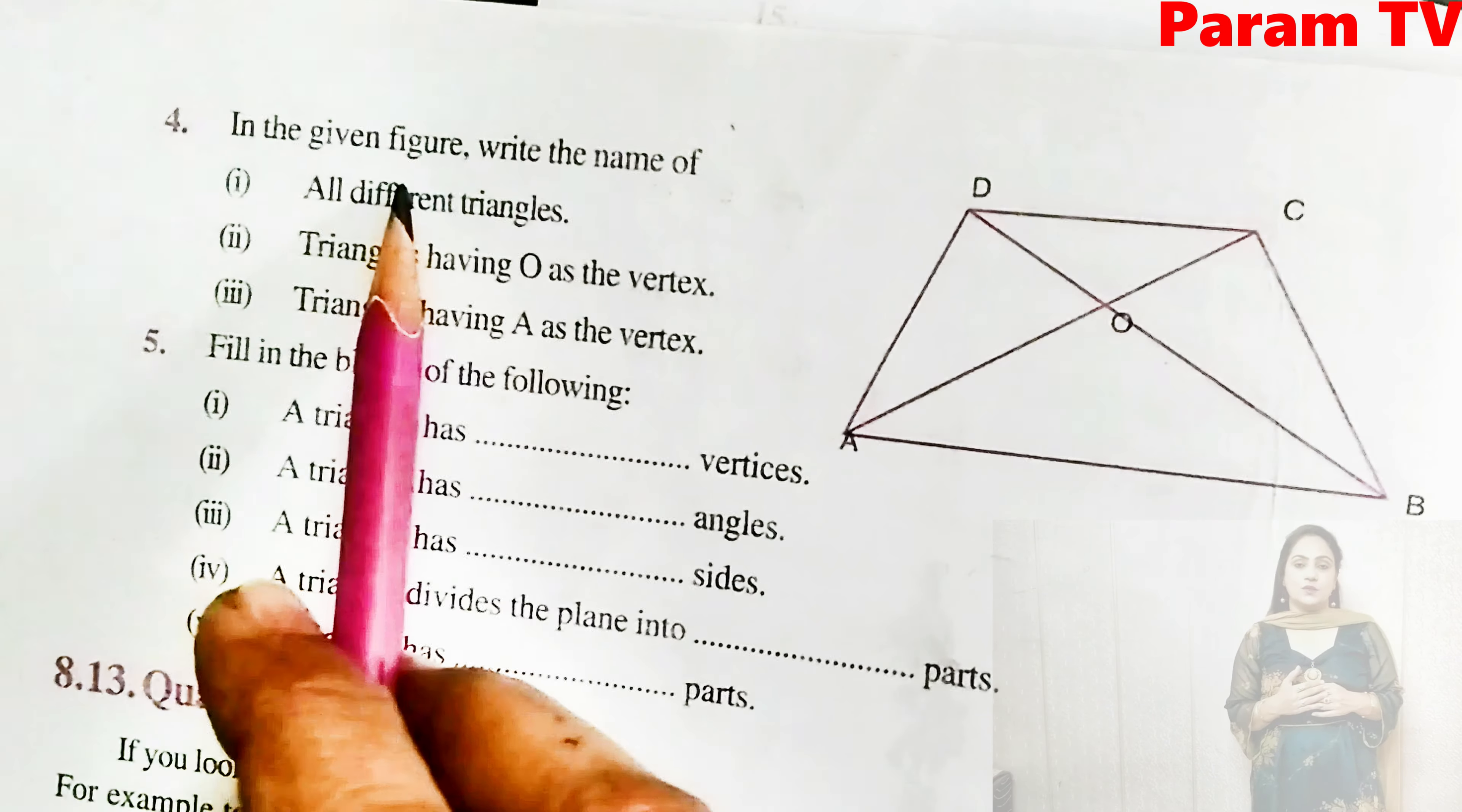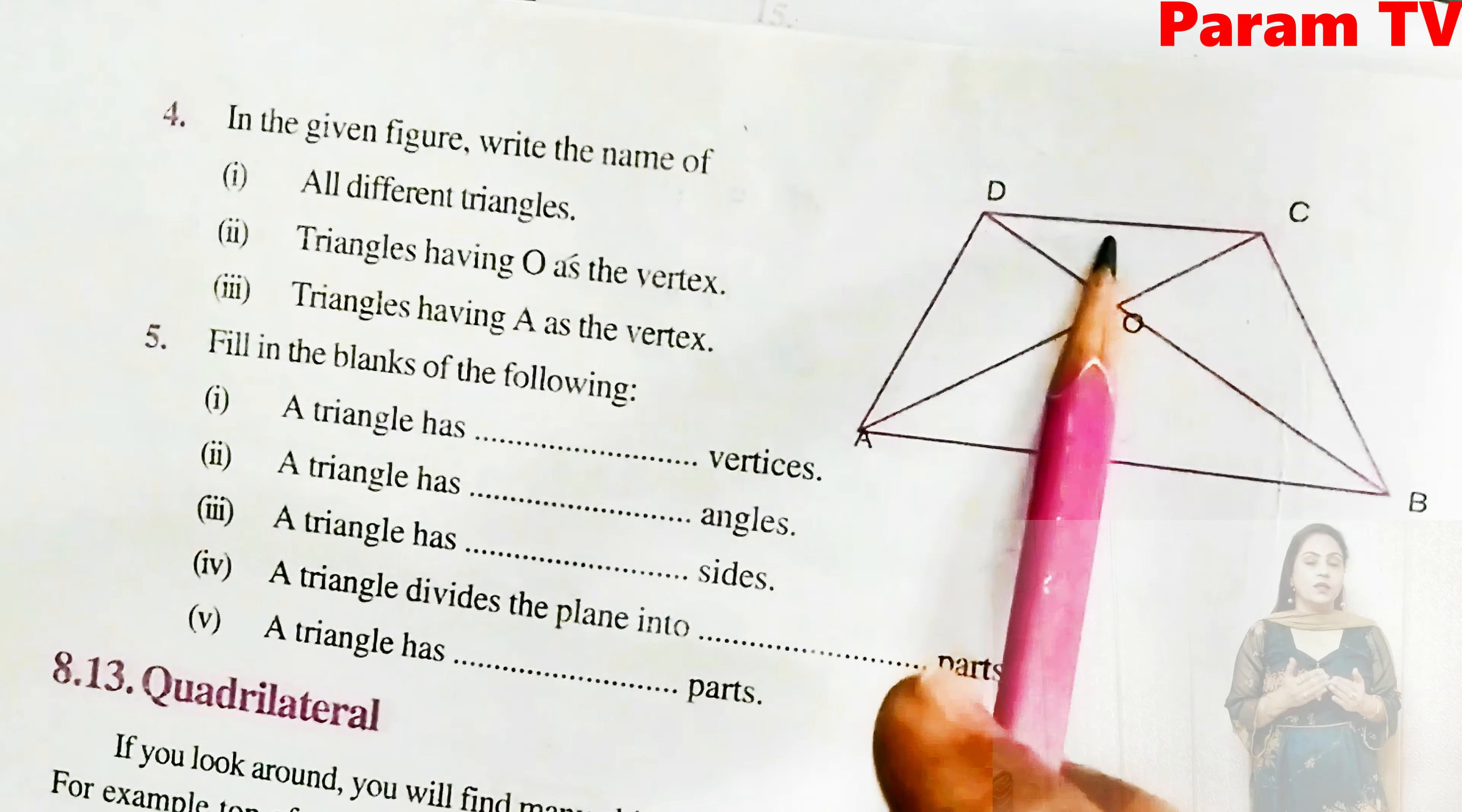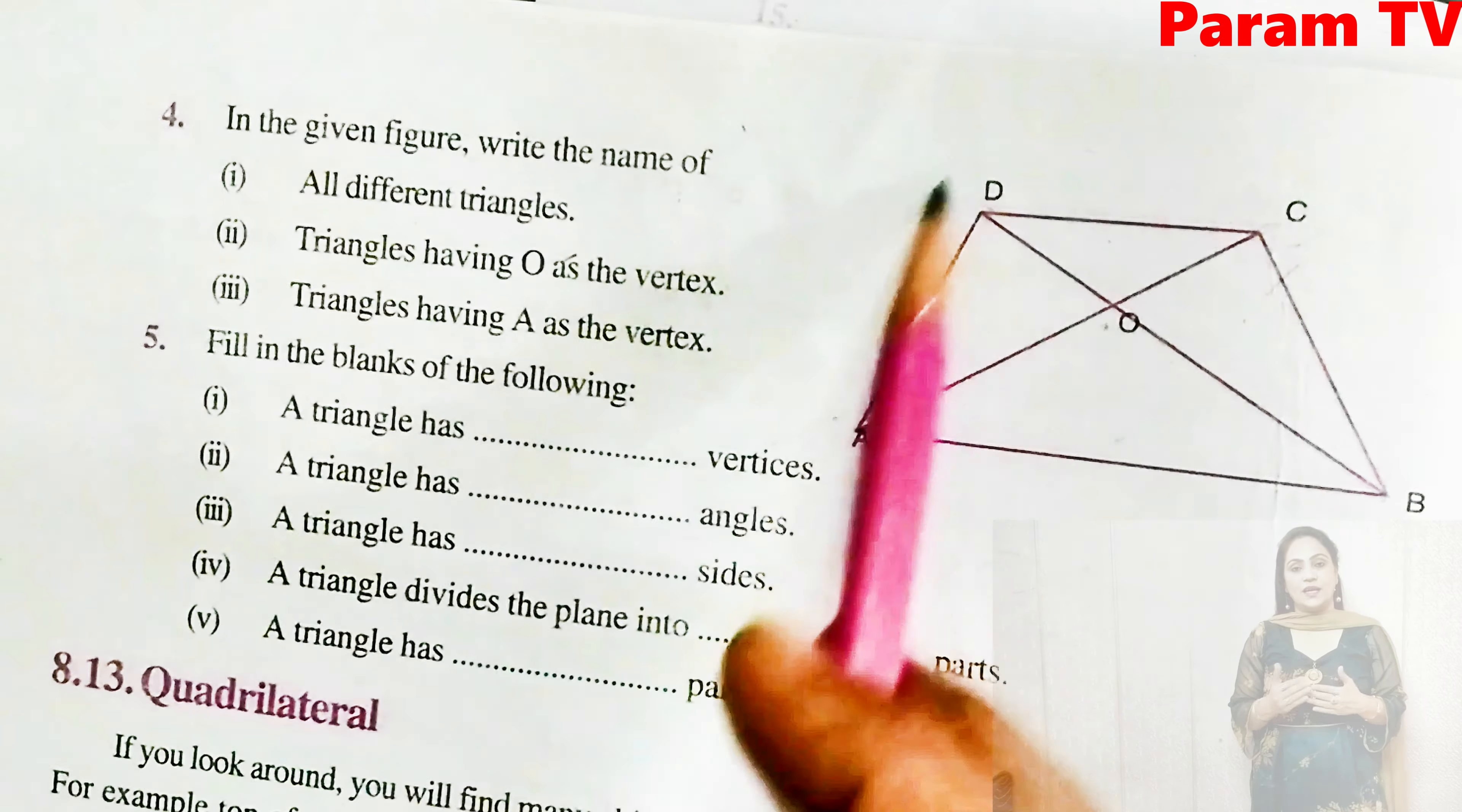Question number four is, in the given figure, write the name of all different triangles. Here see, how many triangles do you see? First you check, how many triangles do you see? This is one, this is two, this is three, this is four. After that one like this five, one from here six. Similarly one from here and one from here, whose base is AB, there will be two. Whose base is DC, there will be two.